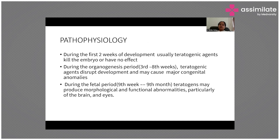Coming to pathophysiology: during the first two weeks of development, teratogenic agents either kill the embryo or have no effect. During organogenesis — the third to eighth week — teratogenic agents disrupt development and may cause major congenital anomalies.